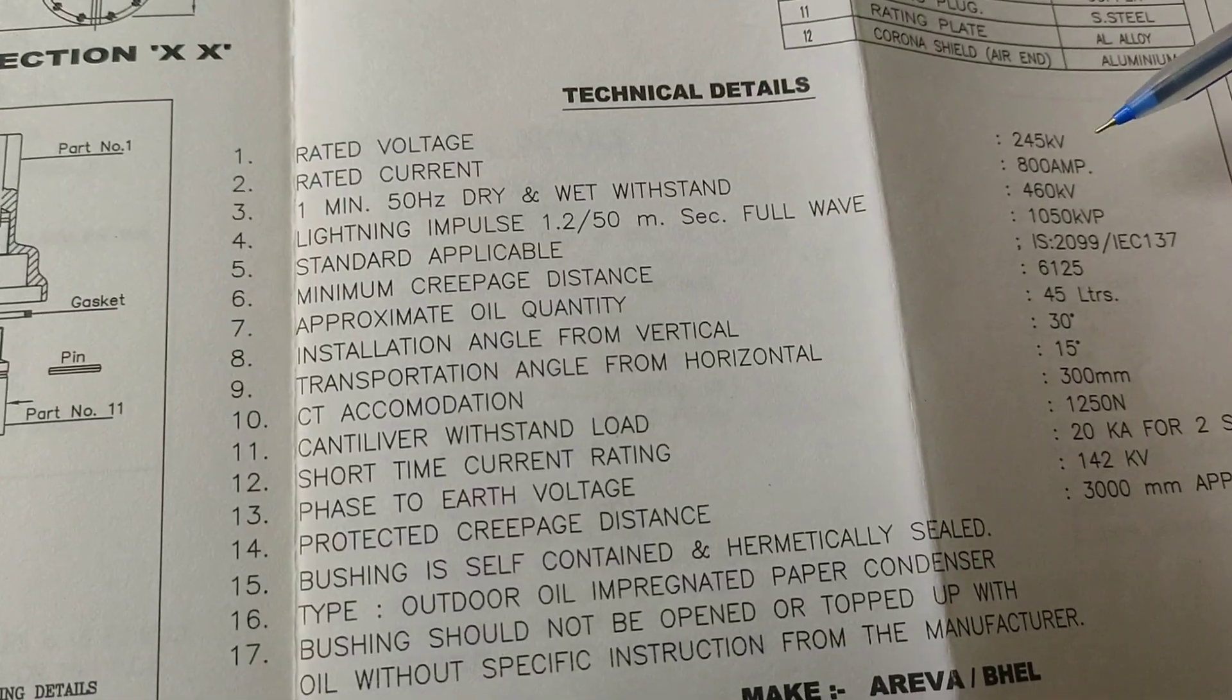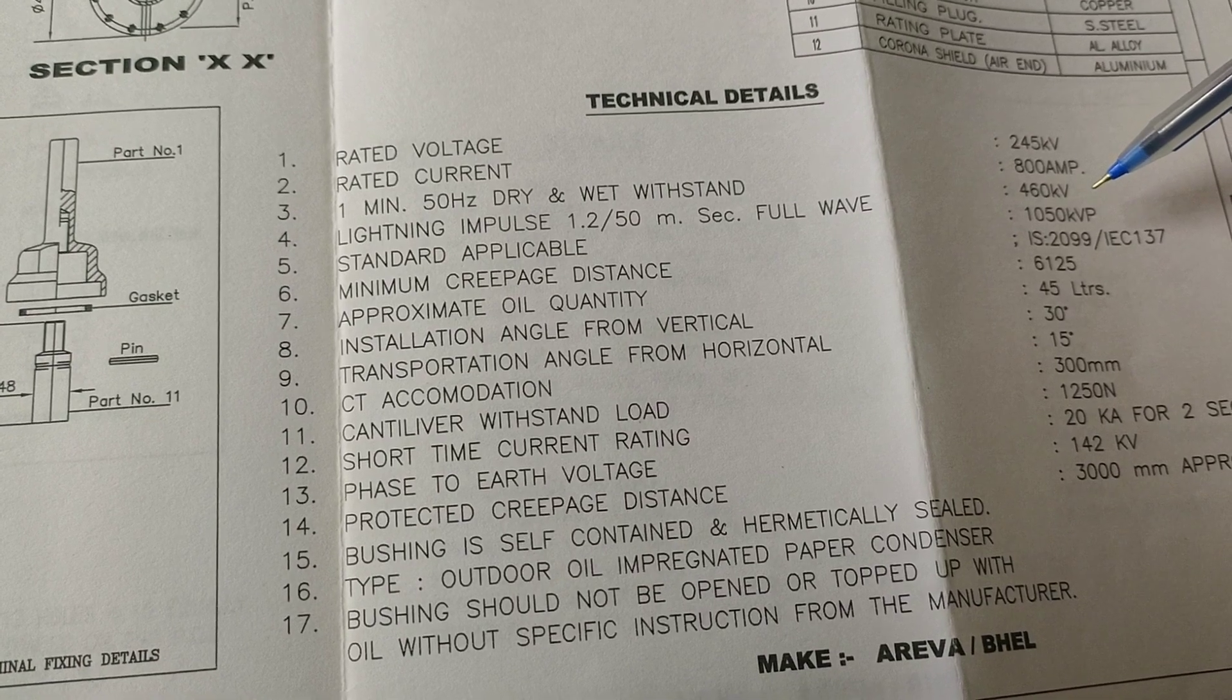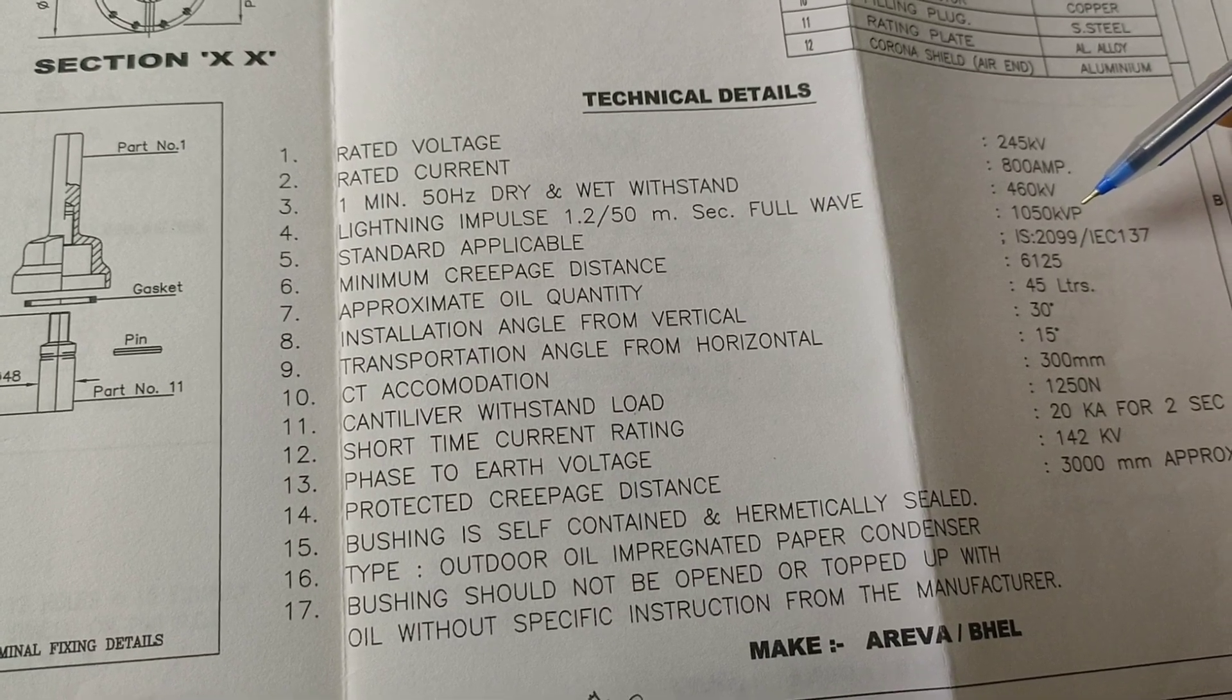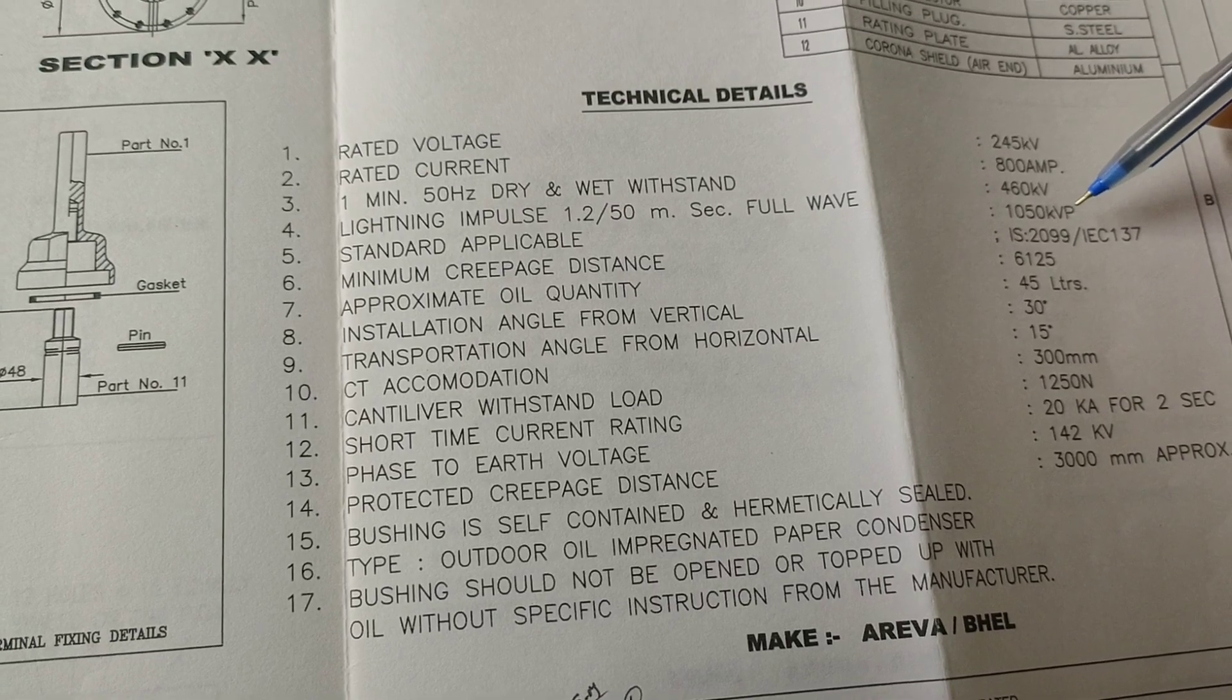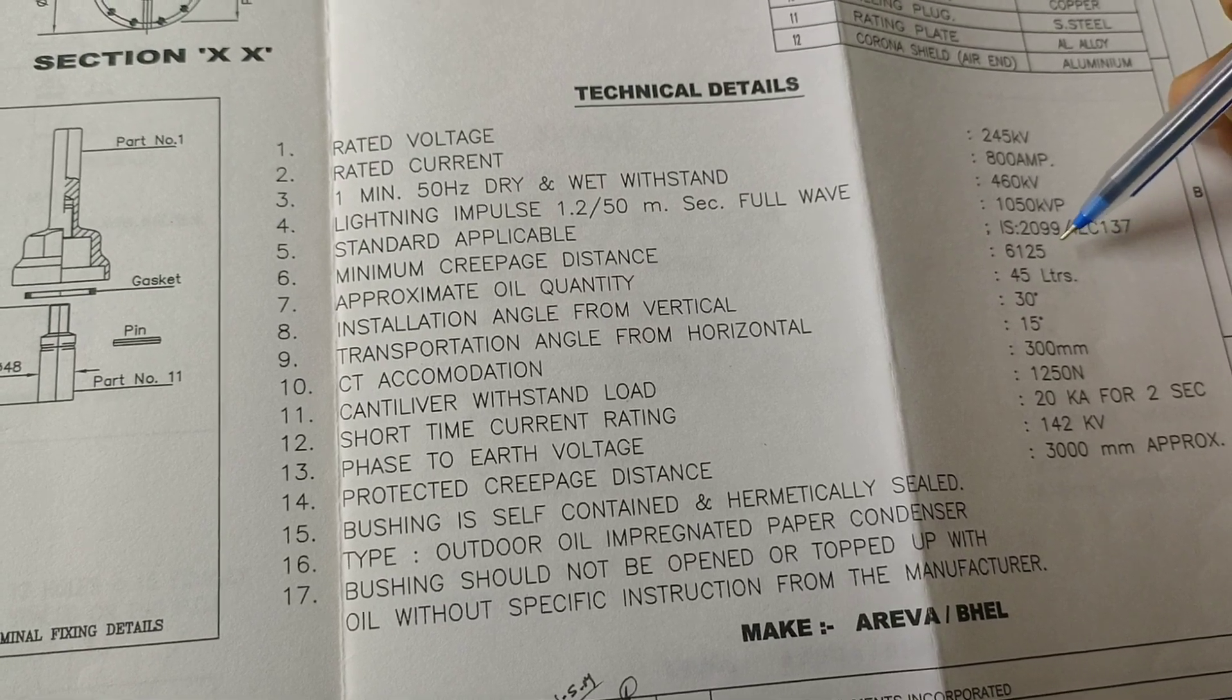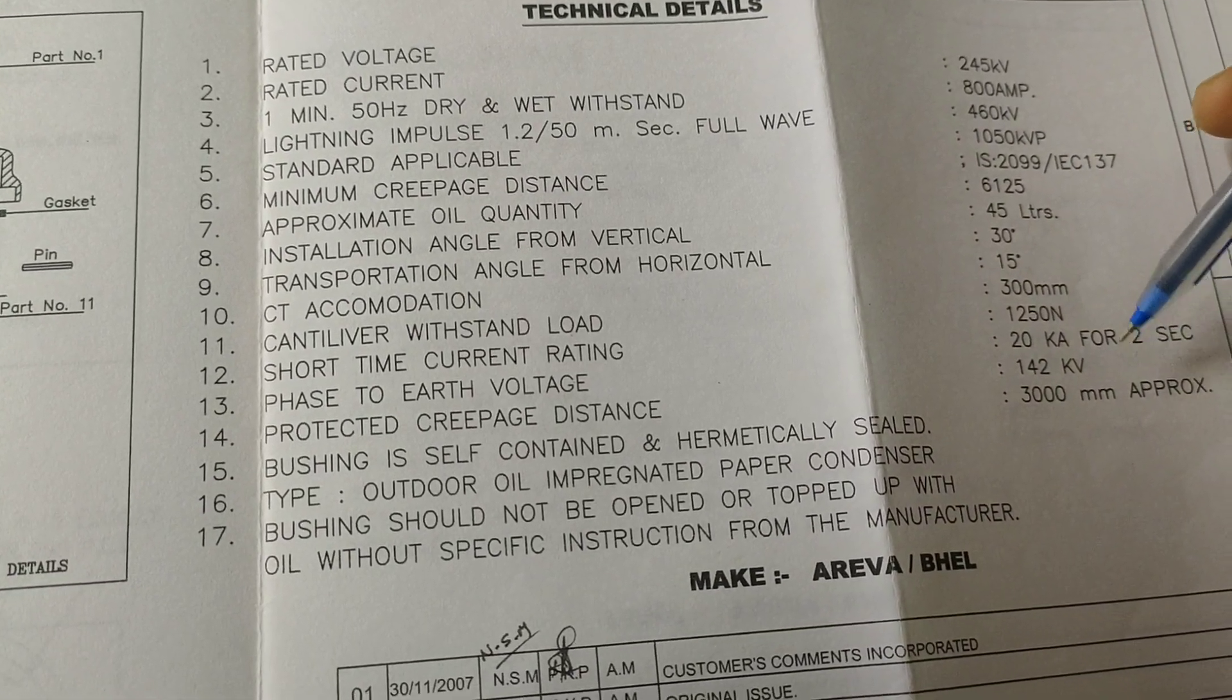The rating of the bushing is 245 kV, 800 ampere. Lighting impulse 460 kV, and also minimum dry withstand 460 kV. Lighting impulse is 1050 kV. Here the approximate oil quantity is 45 liters. Minimum creepage distance 6125 millimeters, and the different parameters are here.